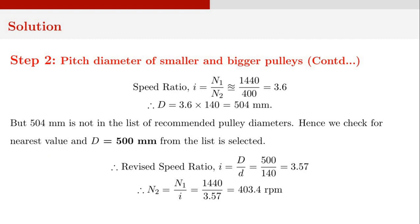Capital D can be found as 3.6 times 140, that is 504 millimeters. However, 504 millimeters is not in the list of recommended pulley diameters. Hence, we check for the nearest value and obtain capital D as 500 millimeters from the list. The revised speed ratio is then I equal to D divided by d, that is 500 divided by 140, giving 3.57.